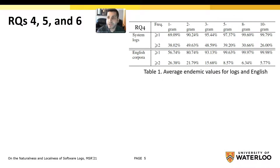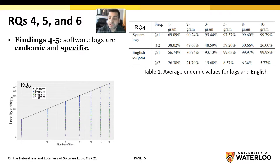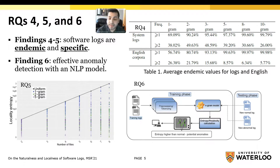The results for research question 4 show that a higher percentage of tokens are endemic for system logs. Endemic tokens are those which only appear in one system. The results for research question 5 show that non-endemic tokens have the tendency to appear in some specific system logs more than others — in other words, they are more specific to a particular system log. Finally, research question 6 shows our tool chain for a system utilizing an NLP model trained on normal logs, which can effectively detect anomalous logs during the testing phase, as these logs result in higher entropies.